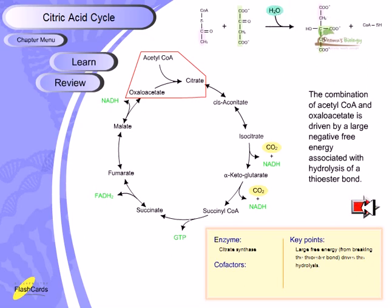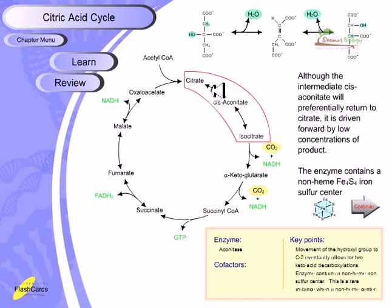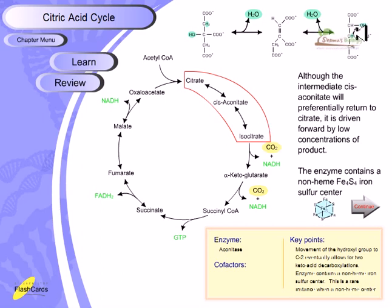The second step is the conversion of citrate into isocitrate. Although the intermediate cis-aconitate will preferentially return to citrate, it is driven forward by the low concentration of product. This is essentially an isomerization: water leaves to produce cis-aconitate — which has a cis orientation of the carboxyl groups — and then cis-aconitate is converted into isocitrate as water is released again.